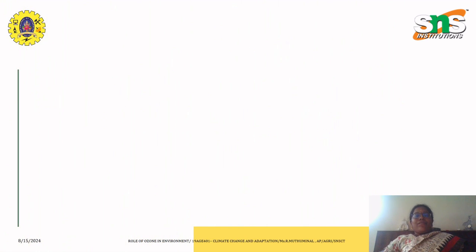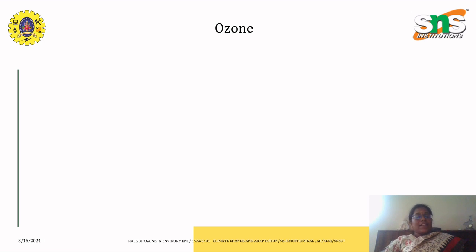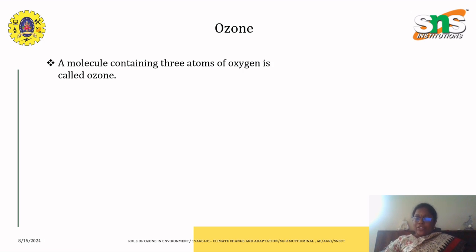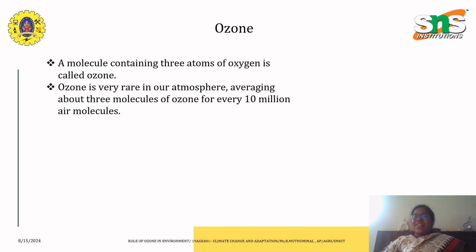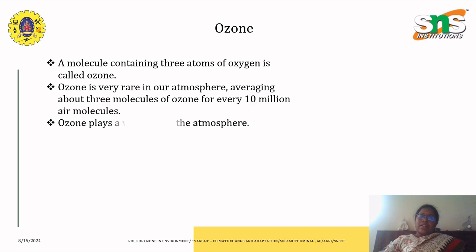Today I would like to clarify what ozone is, what it does in the environment, and how it impacts the agricultural fields. Ozone is nothing but a molecule which contains three atoms of oxygen. This oxygen is very rare in our atmosphere, averaging about three molecules of ozone for every 10 million air molecules.